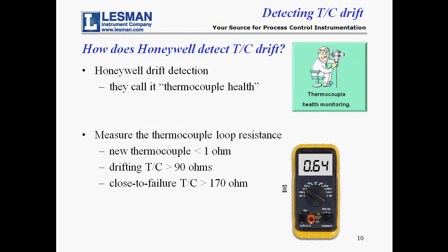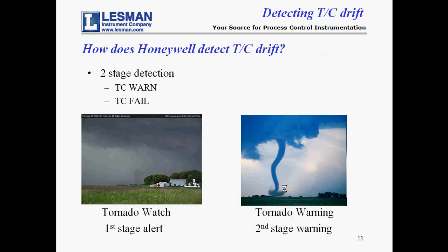Although there's no means to correct for drift, there is a method to detect thermocouple drift. Honeywell controllers detect thermocouple drift and provide two-stage alarming. Honeywell calls its method thermocouple health monitoring. The actual detection method involves measuring the resistance of the thermocouple input circuit. A new thermocouple has a resistance of less than an ohm. A high resistance measurement indicates that a thermocouple is drifting, and even higher resistance indicates that the thermocouple is near failure. The controller's drift detection provides two-stage alarms: TC WARN and TC FAIL.